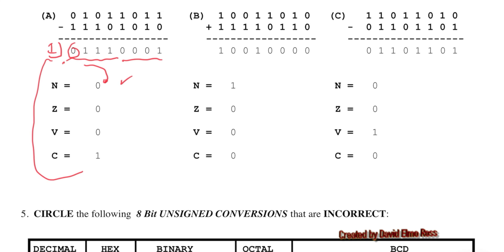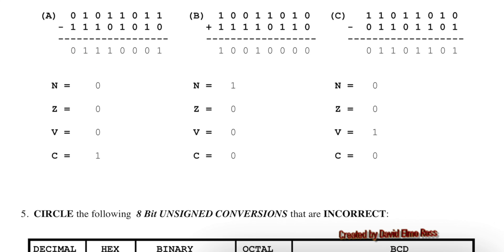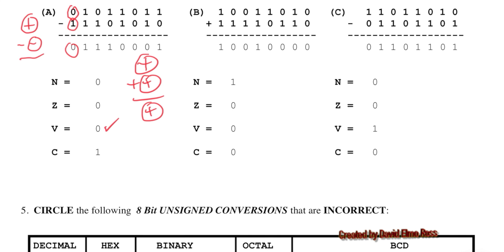For the V-bit in 4a: the MSB of the first operand is 0, meaning it's positive, and we're subtracting a 1 which means subtracting a negative — same as positive plus positive. We got a positive result, so V equals 0. Adding two positives and getting a positive — V is definitely 0.